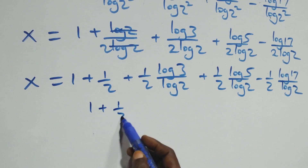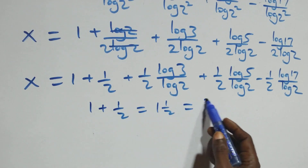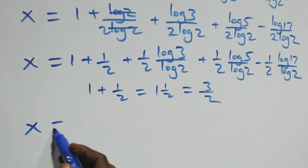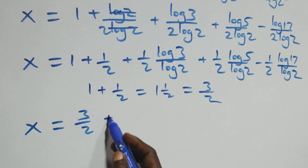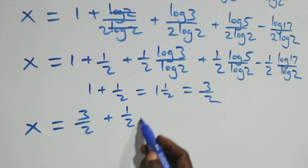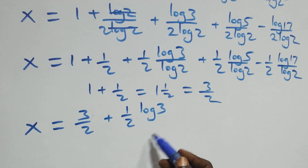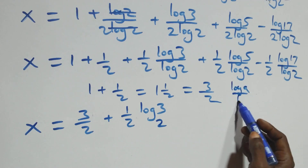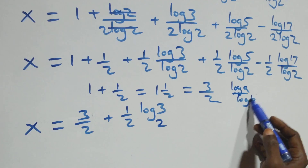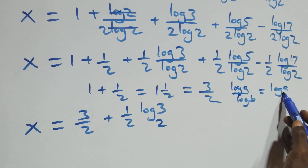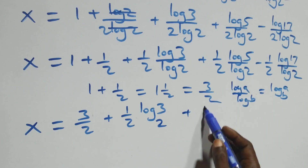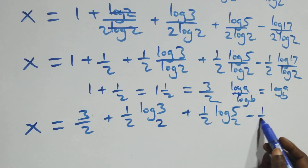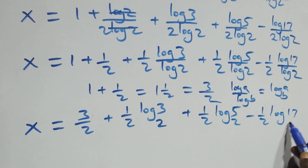Now 1 plus 1/2 equals 3/2. Using the change of base formula, log a over log b equals log a to base b. So x equals 3/2 plus 1/2 · log₂3, plus 1/2 · log₂5, minus 1/2 · log₂17.